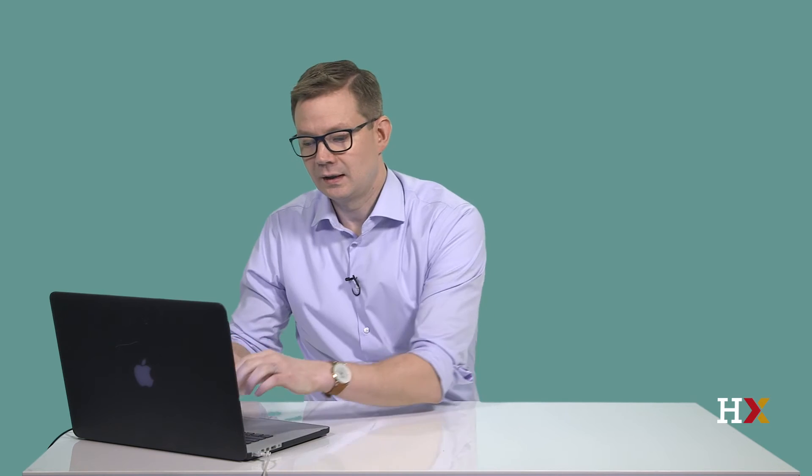As you may have realized, saying Matplotlib.pyplot is kind of a mouthful, and it's a lot to type. That's why virtually everyone who uses the library imports it as PLT, which is a lot shorter. So to import the library, we will type the following: import Matplotlib.pyplot as PLT. Now we're ready to start our plotting.